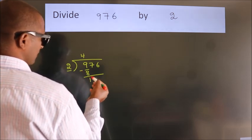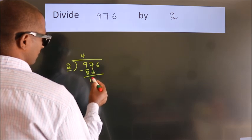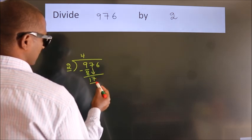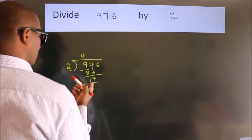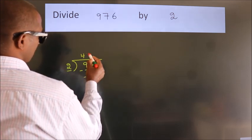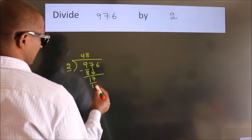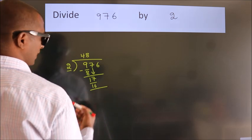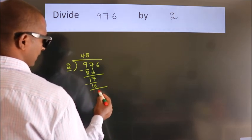After this, bring down the beside number. So 7 down, giving us 17. A number close to 17 in the 2 table is 2 eights, 16. Now we subtract. We get 1.